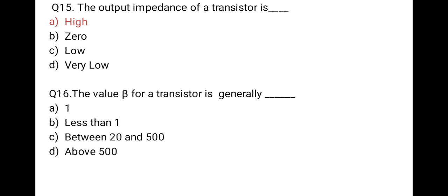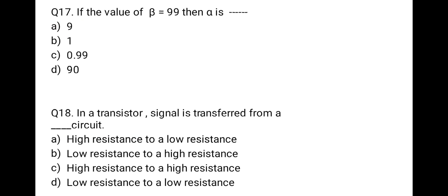The next question: the value of beta for a transistor is generally — the correct option is between 20 and 500. Beta means the current gain of a transistor in the common-emitter (CE) configuration.